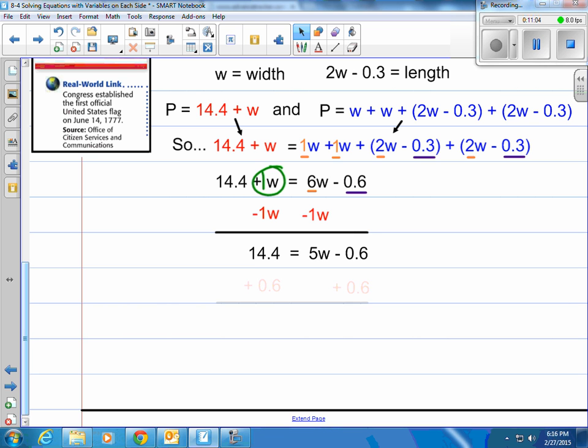Next step, let's get rid of that 0.6 and let's add 0.6. And when we add that to both sides, we end up with, well there, that's nice. On the left we end up with 15. On the right we have 5W.